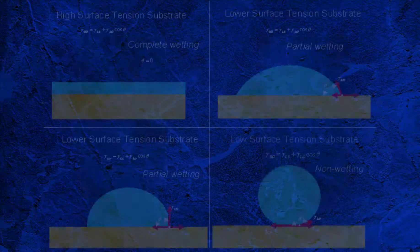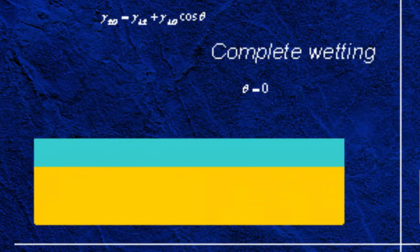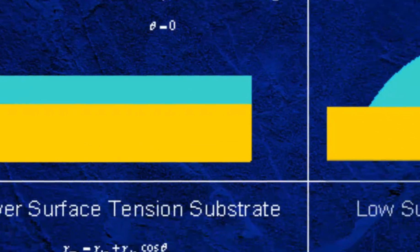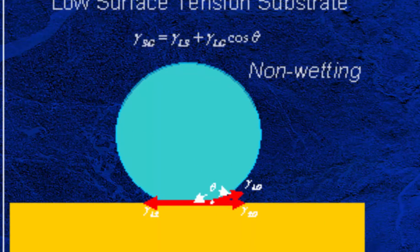Adhesive forces between a liquid and solid cause a liquid drop to spread across the surface, while cohesive forces within the liquid cause the drop to ball up and avoid contact with the surface.